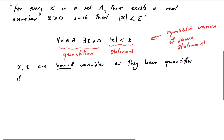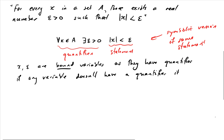If you have any variables left over in your statement that don't have a quantifier attached, they are called free variables — not to be confused with free variables you may have come across in linear algebra.